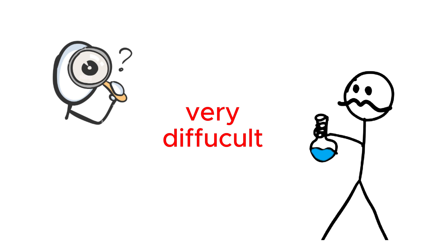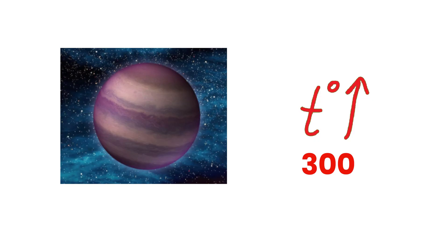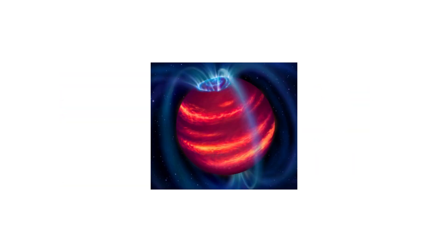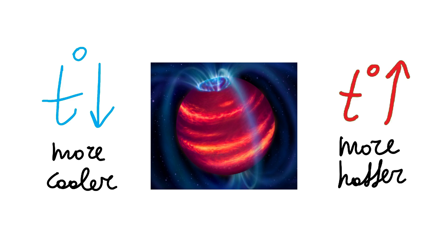These objects are dim and difficult to detect because they emit very little light compared to stars. Their temperatures range from about 300 to 1500 degrees Celsius, making them cooler than stars but hotter than planets like Jupiter.